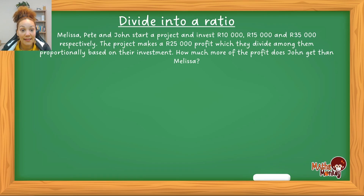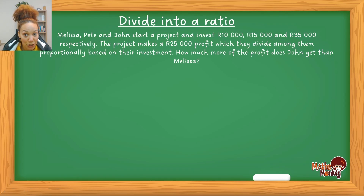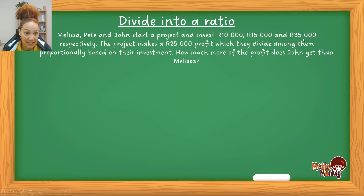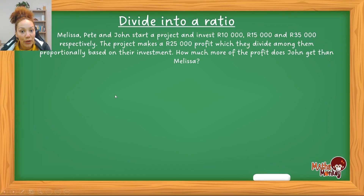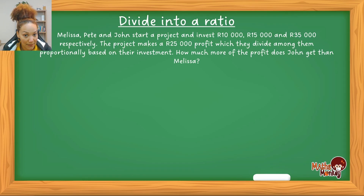The example: Melissa, Pete, and John start a project and invest R10 000, R15 000, and R35 000 respectively — meaning in that order. The project makes a profit of R25 000, which they divide proportionally based on their investment. If they gave more, they get more of the profit. The question asks: how much more of the profit does John get than Melissa?